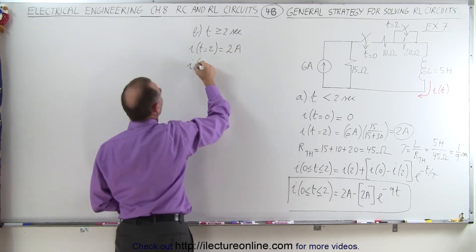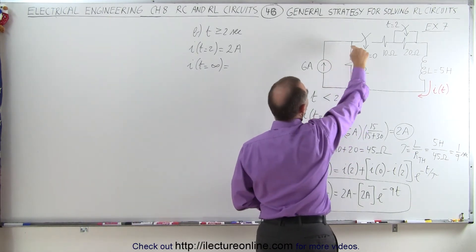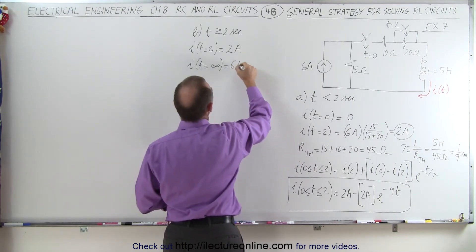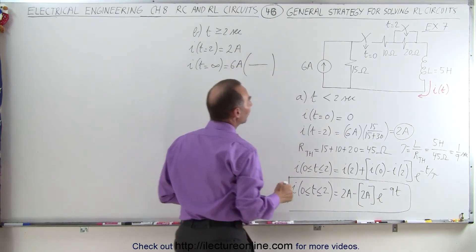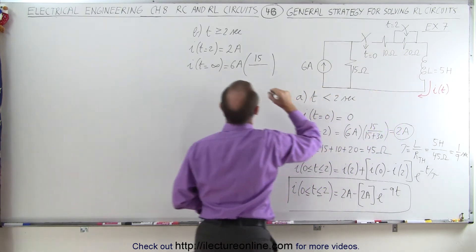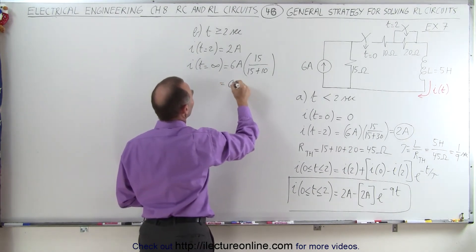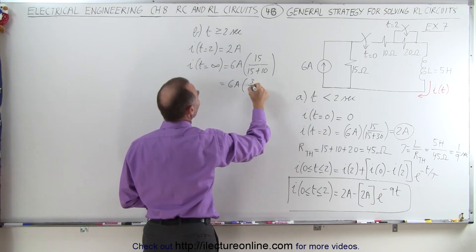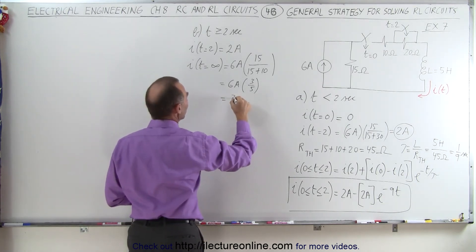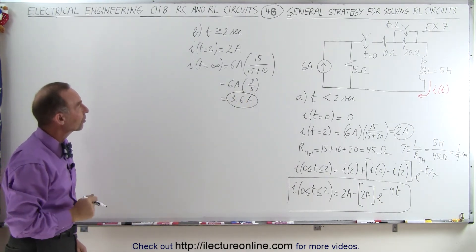Now we want the current when time is equal to infinity. At that point, you have six amps divided between two branches, but now the resistance makeup will be different. It's going to be six amps times the ratio of the resistance in the other branch, which is 15, divided by the sum of the two. Now the 20-ohm resistor will not be there, so it'll be 15 plus 10, giving 15 over 25. That equals six amps times three-fifths, which is 3.6 amps. So after a lot of time has elapsed, the current through the inductor will be 3.6 amps instead of two amps.